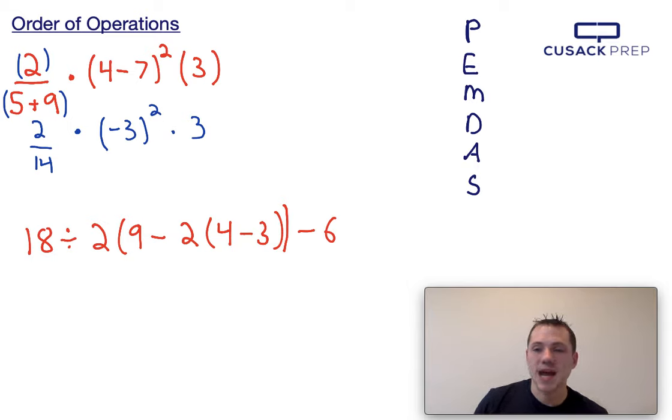And at the same time, I'm going to go ahead and simplify this 2 over 14 to 1 divided by 7. Negative 3 squared is 9, and times 3.